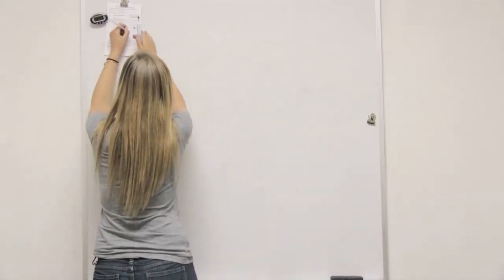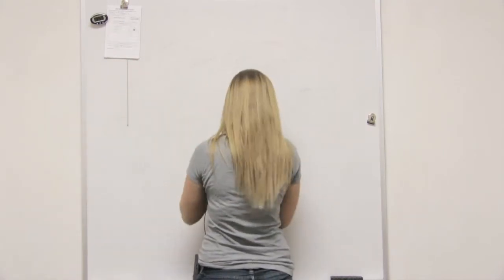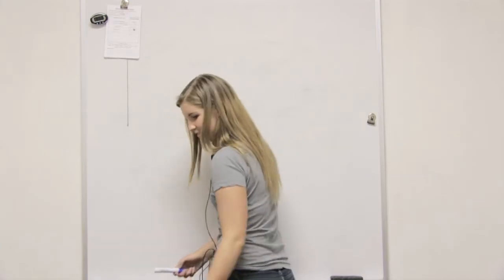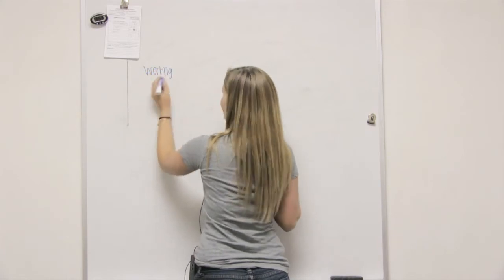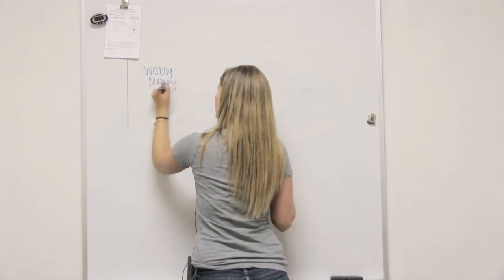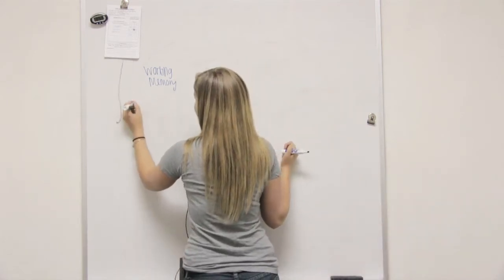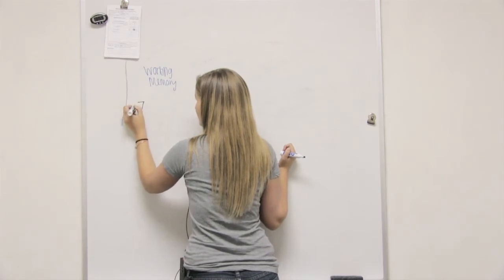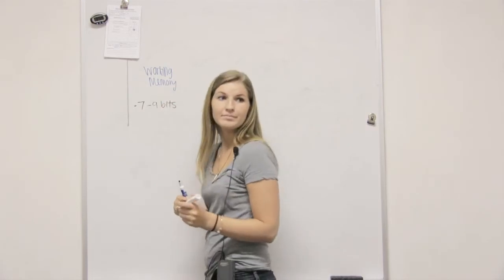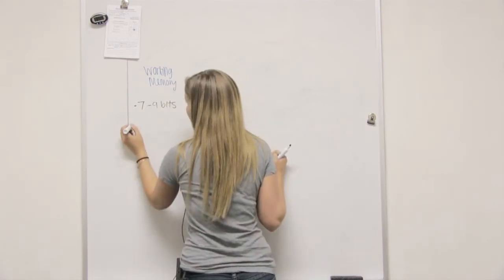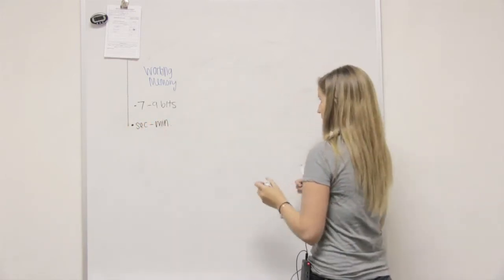Know that you're going to start with working memory. That's the blue. That's why we have two blues. So you have working memory. Working memory can hold seven to nine bits of information. Kind of like a phone number is a great example. And then it lasts seconds to minutes.